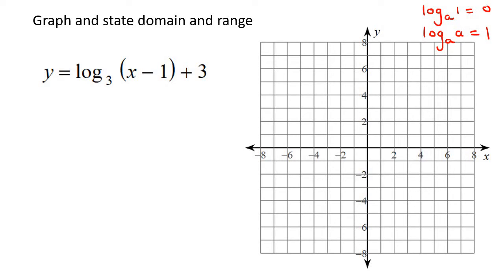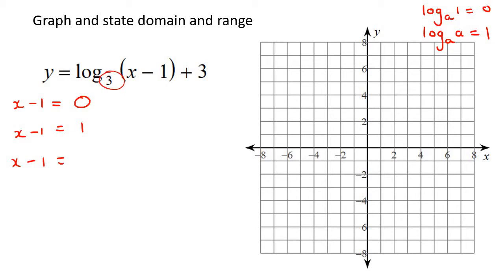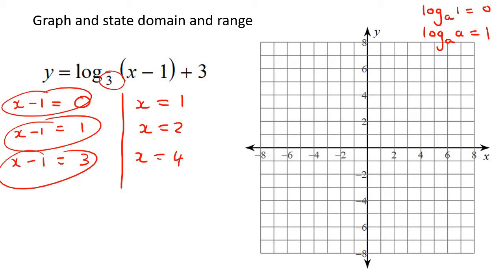Now, what I always want you to do is take this part — the argument of the log — and make it equal to three different things: make it equal to 0, make it equal to 1, and make it equal to whatever the base is. The base in this scenario is 3. Then go solve each of those equations. So x would be 1, x would be 2, and x would be 4 if you solve each of those.